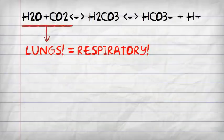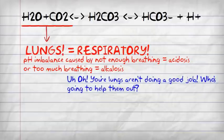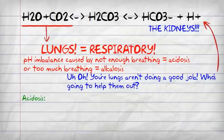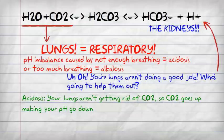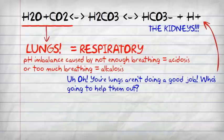On the left-hand side, the CO2 and lungs are respiratory, so the lungs not keeping up causes acidosis or alkalosis. When this happens, the kidneys start to compensate. In respiratory acidosis, your lungs aren't getting rid of enough CO2, and that builds up causing acidosis. The kidneys compensate by secreting the base bicarbonate and trying to get rid of the excess hydrogen ions, which are acidic.